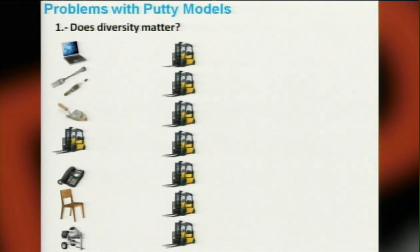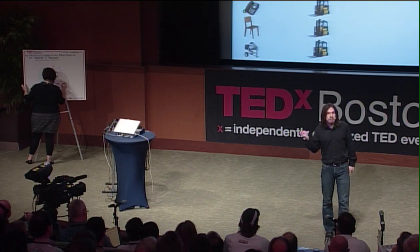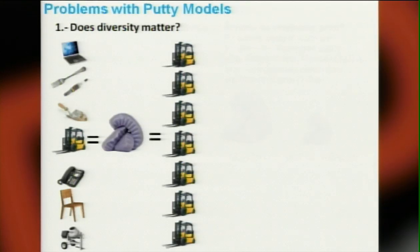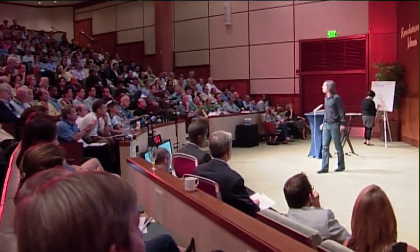When doing models, we always say we must keep it simple because the world is too complex. But there are problems with putty models. In a putty world, diversity doesn't matter — as long as it adds up to the same amount of putty, it's all the same. Economies grow by saving putty, and it doesn't matter where you get it from: putty from exporting cars equals putty from exporting oil. Money is money; a dollar is a dollar.